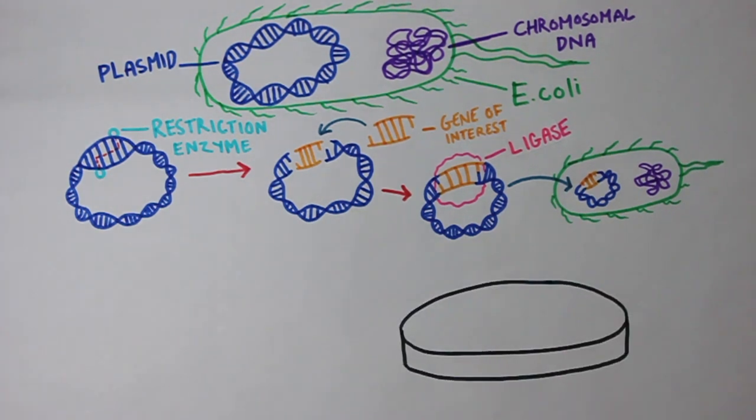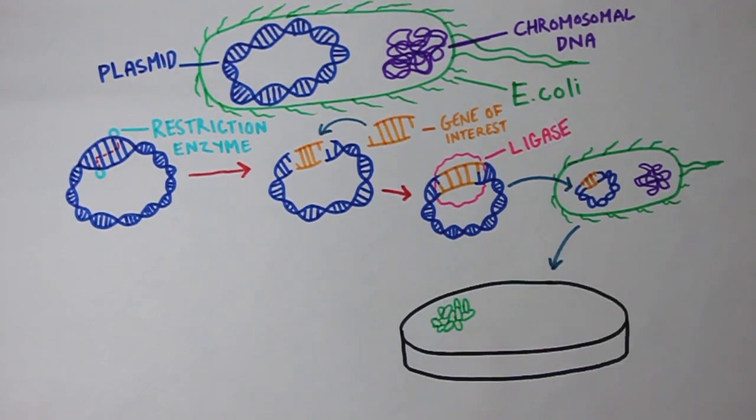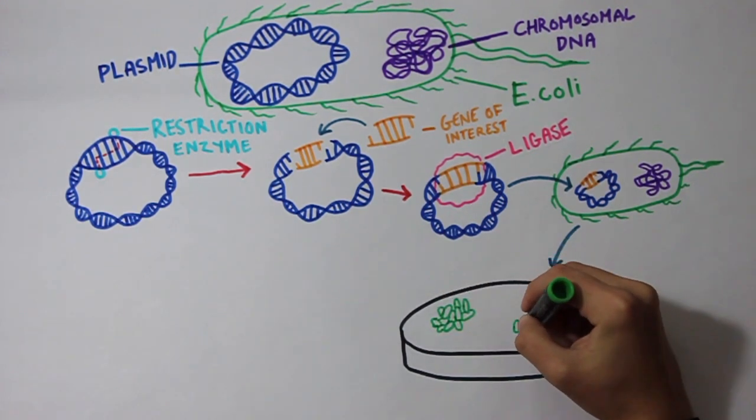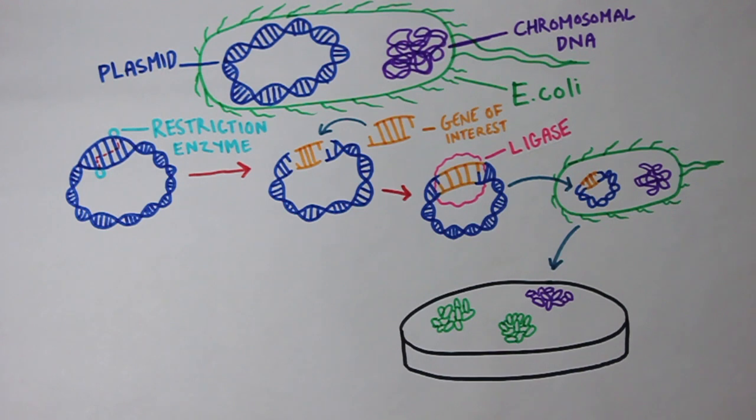Now you can grow E. coli colonies, which have millions of E. coli cells inside of them. Some E. coli colonies will contain the correct plasmid inside, while others have the incorrect plasmid. You must make sure to choose the E. coli colony with the correct plasmid.